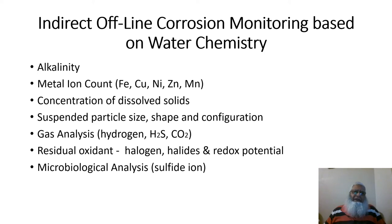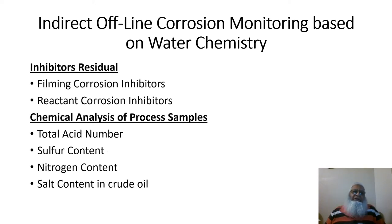Microbiological analysis — mainly for sulfide ions — is very important in determining the cause of corrosion and its subsequent control. Further indirect offline monitoring based on water chemistry includes inhibitor residuals (filmic and reactant corrosion inhibitors), and chemical analysis of processed samples including total acid number, sulfur content, nitrogen content, and salt content in crude oil.